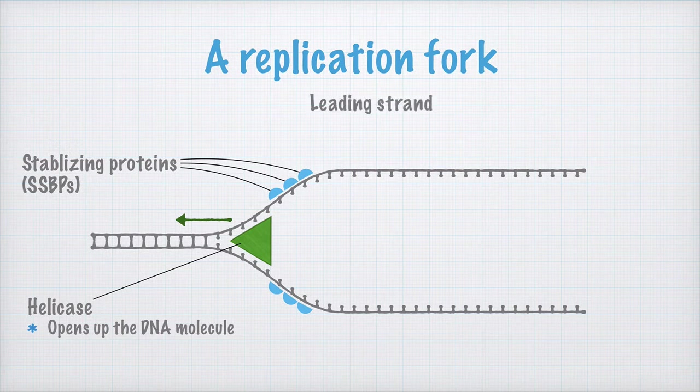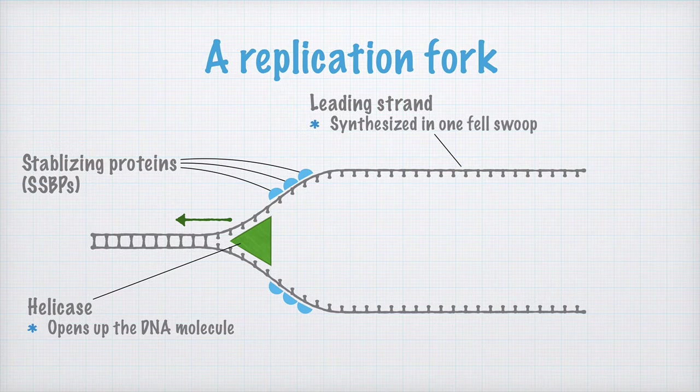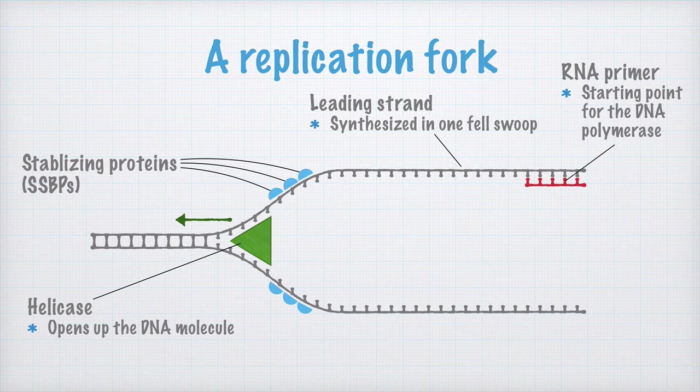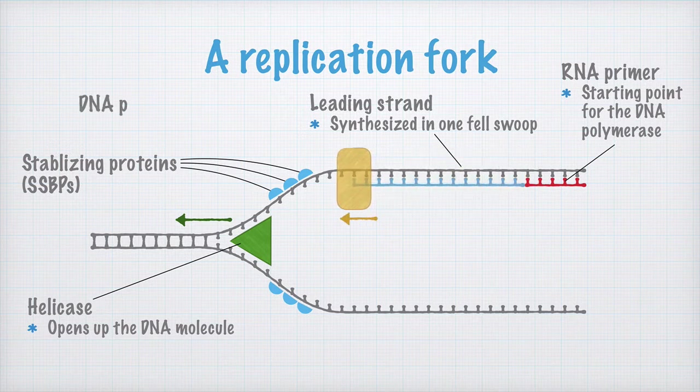Up here, we draw the leading strand. The leading strand is synthesized in one fell swoop, like this. First, an RNA primer is laid down to act as a starting point for the DNA polymerase. And here it comes! It synthesizes new DNA in this direction.